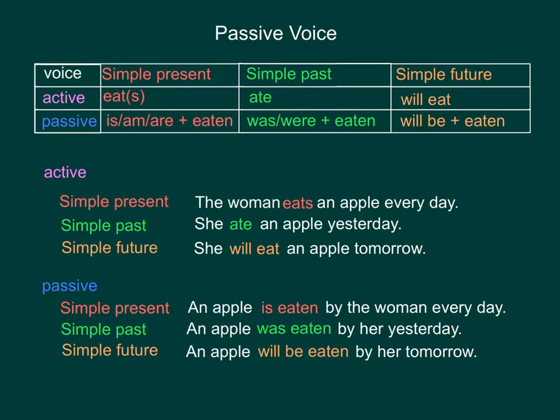In the passive voice, the subject becomes the receiver of the action, and the verb forms of these three simple tenses change. The present tense uses am/is/are with a past participle. For the past tense it becomes was or were with a past participle. For the future tense it becomes will be with a past participle.